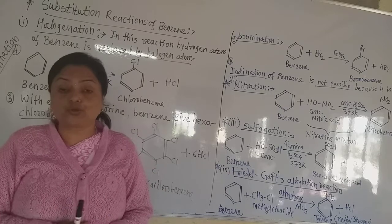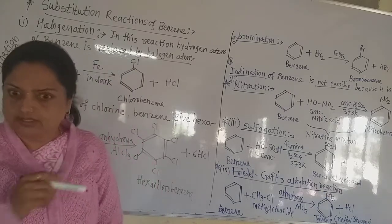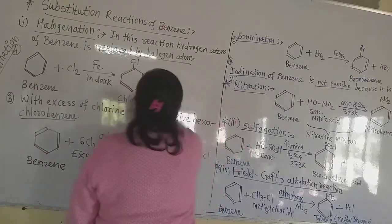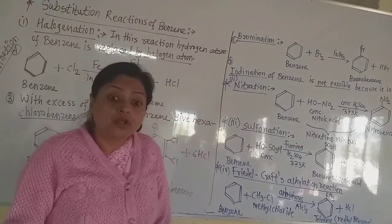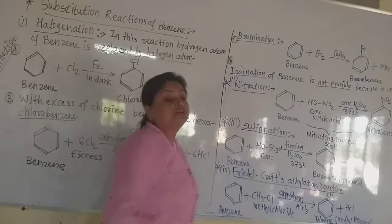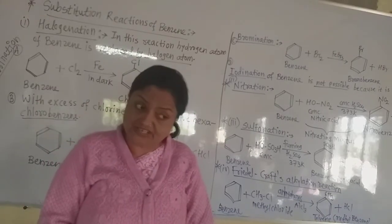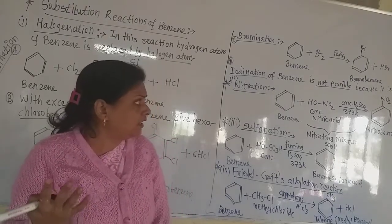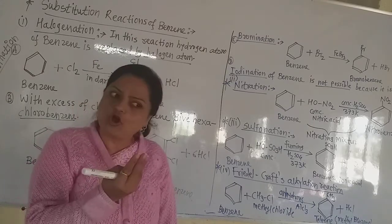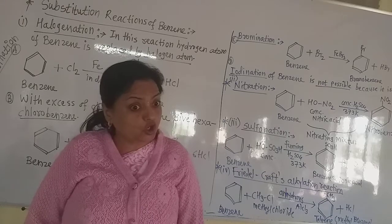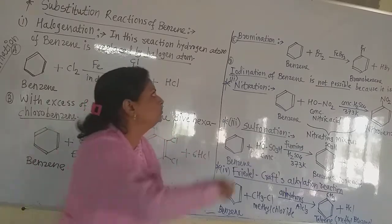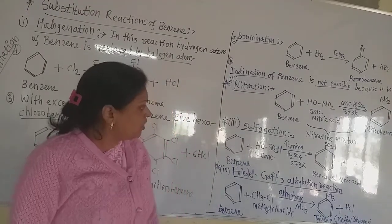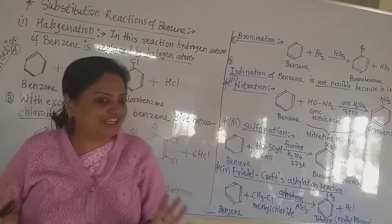Remember, students, there is always a short note question on this topic. If they ask you to write a short note on halogenation of benzene, then write everything up to this point. If they ask in a two-mark question how you will obtain bromobenzene from benzene, that is two marks. But for a short note on halogenation of benzene, write all reactions because it may be three or four marks. Now, what is happening in nitration of benzene — that is a very important topic.